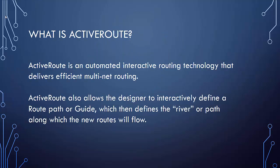What is ActiveRoute? It is an automated interactive routing technology that delivers efficient multi-net routing. ActiveRoute also allows a designer to interactively define a route path, which then defines the river of which the new routes will flow.